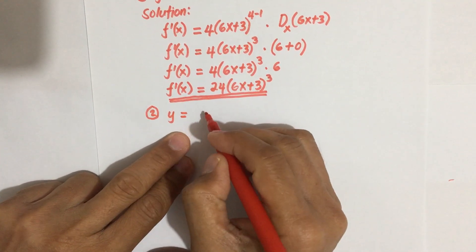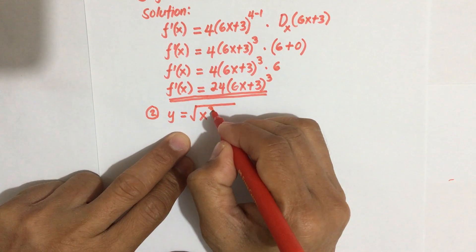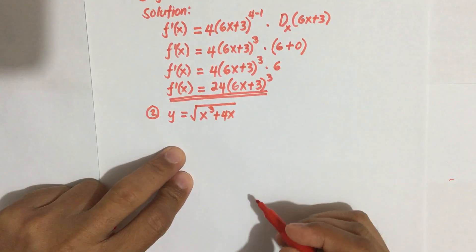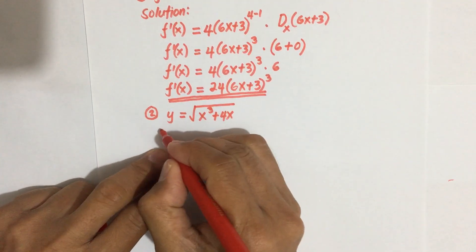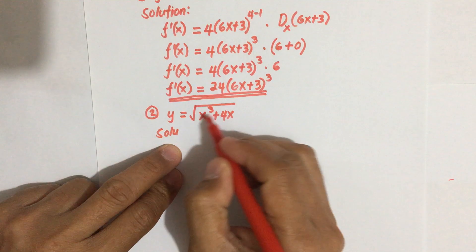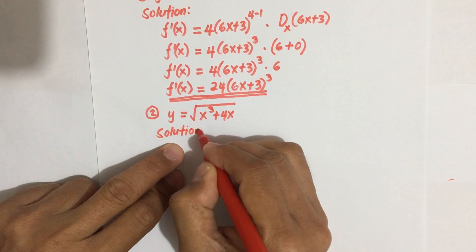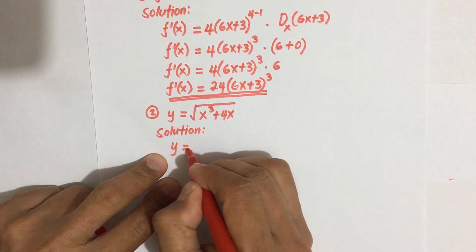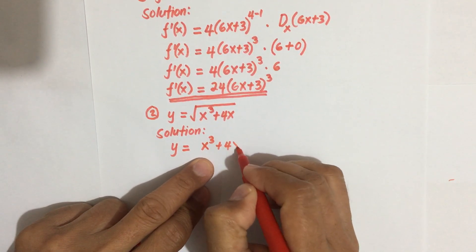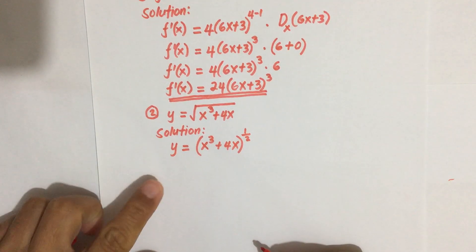In example number 2, we are given y equal to the square root of x cubed plus 4x. The first step in the solution is to transform this radical into a form with a rational exponent. So we rewrite y as the quantity x cubed plus 4x raised to the power one half.